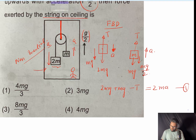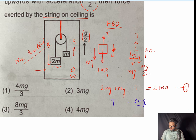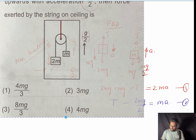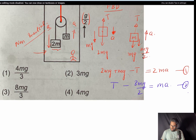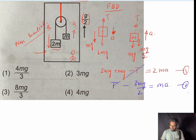For the second block going upward: T minus 3mg/2 equals m·a. This is equation number two.